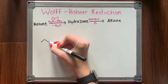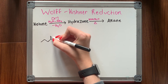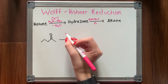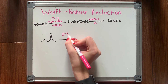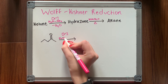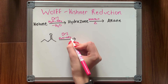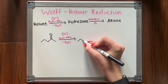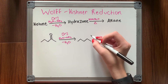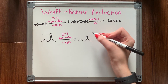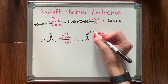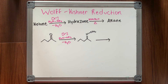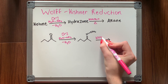Now we have the Wolff-Kishner reduction, another one used frequently in organic chemistry two. It involves the conversion of a ketone to a hydrazone, which follows the mechanism of an imine, and then the hydrazone is reduced to an alkane in strongly basic conditions. This is a very versatile reaction — if you want to see the mechanism for this one, leave me a comment below.